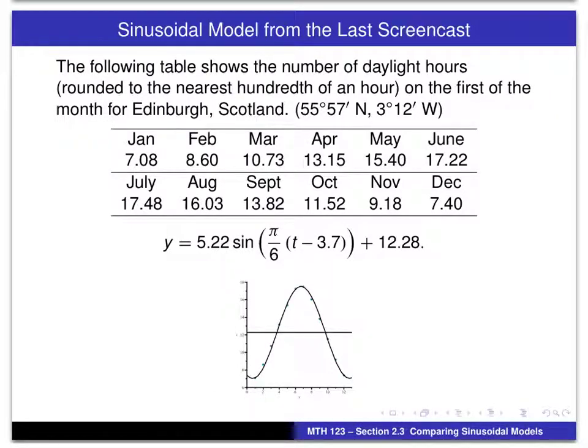This is actually what we found. We used this data for the number of hours on the first day of each month and we numbered the months 1 through 12 and ended up with this sinusoidal model for the number of hours of daylight. We see the graph there and how well the graph actually fits the data.